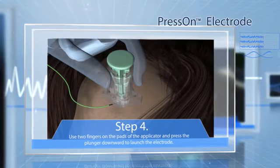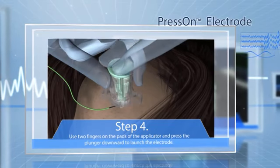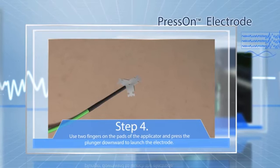Step 4: Use two fingers on the pads of the applicator and firmly press the plunger downward to launch the electrode. When the plunger is completely depressed, the electrode is deployed.